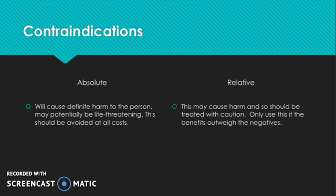A contraindication is a physical or mental condition or factor that increases the risk involved when engaging in a particular activity. A contraindication may also refer to when a treatment should not be used because it may be harmful to the client rather than being beneficial. There are two different types of contraindications: absolute and relative.